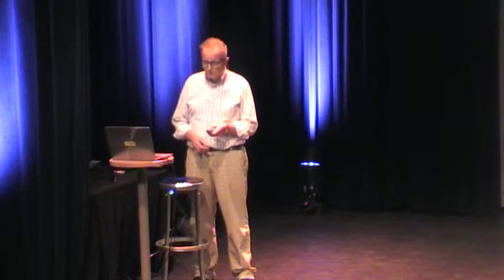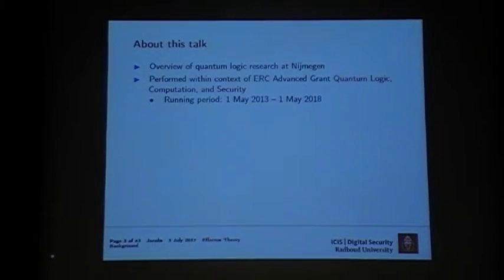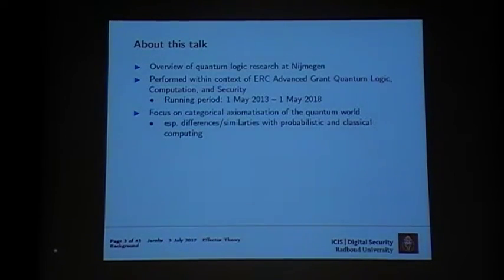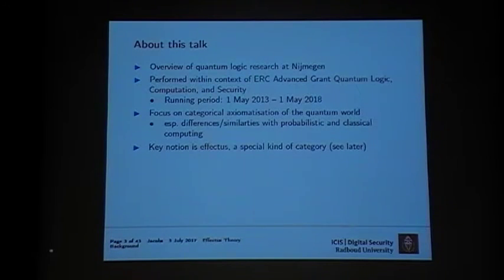This work has been done in the context of my ERC advanced grant. These are the most pleasant grants to have — quite a lot of money for a long period. I'm not covering everything we've done, but mostly what I'll talk about is the categorical axiomatization of the quantum world. I'm particularly interested in the differences with the Boolean set-theoretic world and the probabilistic world, and the notion of effect is very important here.